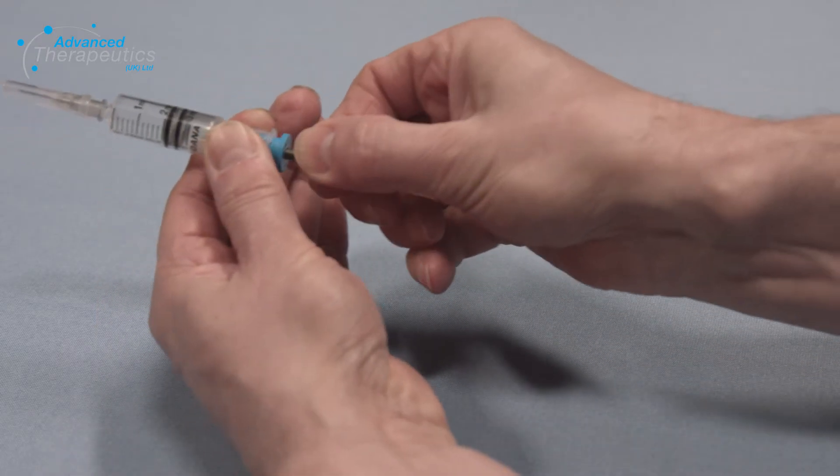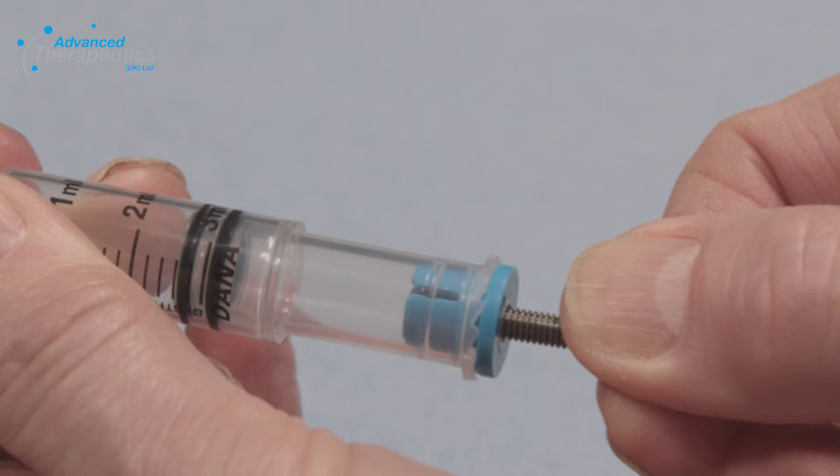Insert the linking screw into the new reservoir, ensuring the two plastic teeth fully engage with the serrated end of the reservoir. It should firmly click into place.